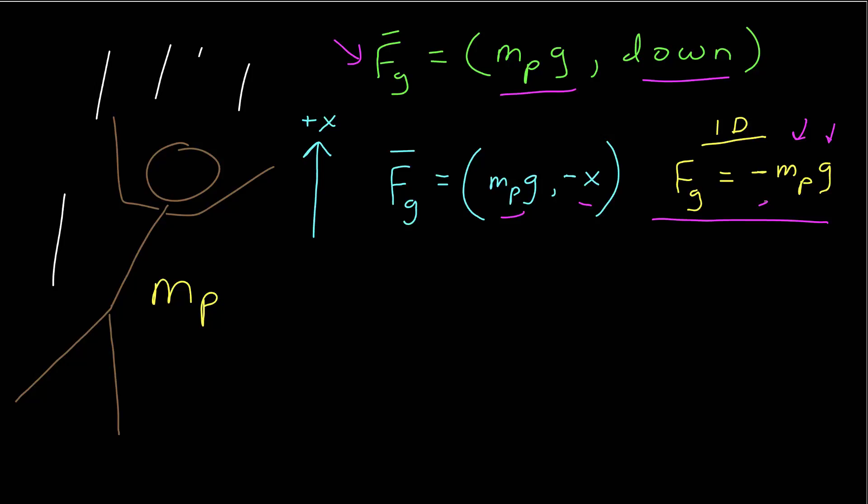I don't have to use that coordinate system, however. Here's another coordinate system where I've identified the positive y-axis as down. In this case, the force due to gravity still has the same magnitude. Its direction is still down, but with this coordinate system, that would be in the positive y direction.